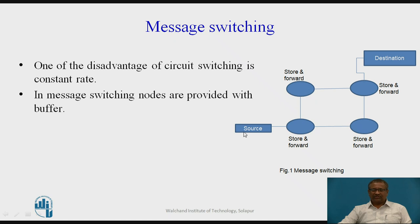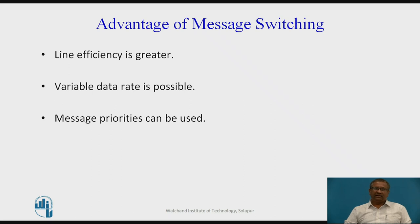This is a source DT and this is a destination DT, connected by nodes in the communication network. There are four nodes, each having the capability of store and forward. The line efficiency is greater, as a line not used by a particular DT can be used by other DTs, so line efficiency increases. Because of this store-and-forward facility, we can have a variable data rate.